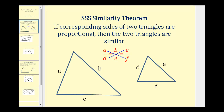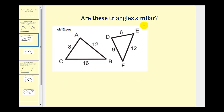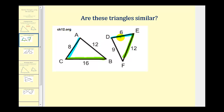Let's take a look at a couple of examples. Here we want to determine if these two triangles are similar. The most important thing is we have to identify the corresponding sides before we set up our proportion. The side of length 16 corresponds to the side of length 12, as those are the longest sides. The side of length 8 corresponds to the side of length 6, as those are the shortest sides, which leaves the remaining side to correspond to the remaining side.